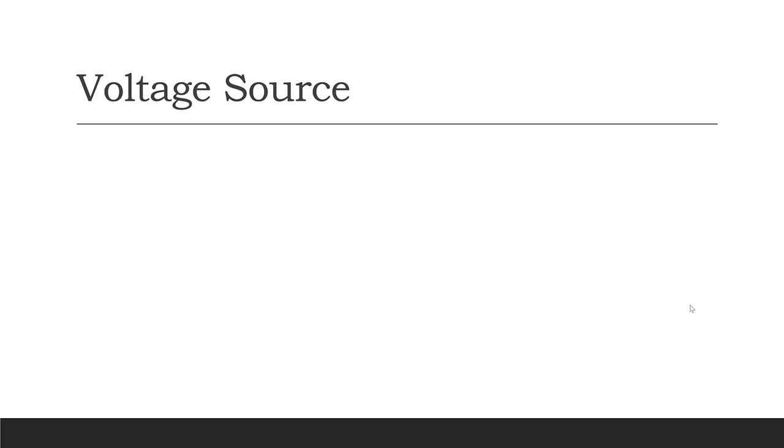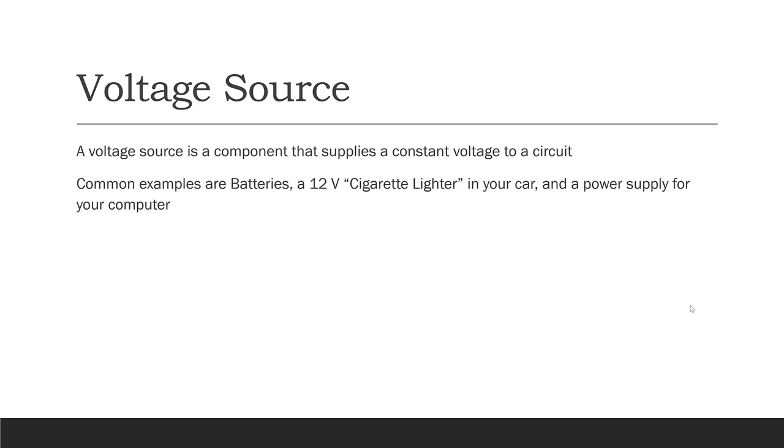Now let's talk about voltage sources. A voltage source is a component that supplies a constant voltage to a circuit. A few common examples are batteries, 12-volt cigarette lighters that you might have in your car, and power supplies for your computer. These all provide constant voltage sources.